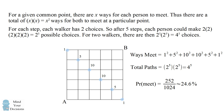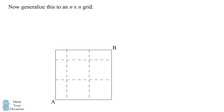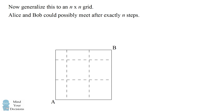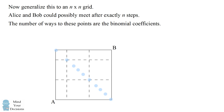We can now generalize our logic to an n by n grid. For an n by n grid, the only places Alice and Bob could possibly meet are after exactly n steps, along the main diagonal — that's the only time they could be at the same place at the same time. We can use the same argument about the number of ways they could reach these points — these are going to be the binomial coefficients.